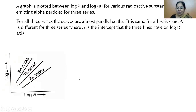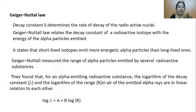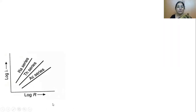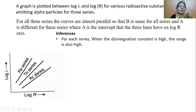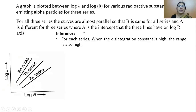The linear relation is given by: log λ = A + B·log R. Since the three series curves are almost parallel, B is the same for all series, as B gives the slope. Whereas if you extend the lines to meet the log R axis, they meet at different points, so A is different for different series.